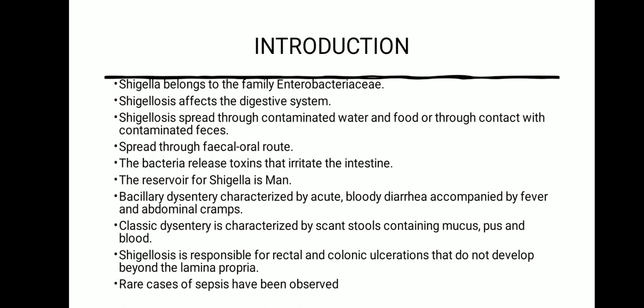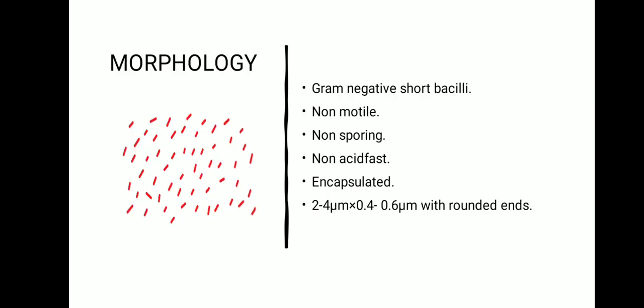Shigellosis is responsible for rectal and colonic ulceration due to severe infection, and does not develop beyond the lamina propria. Rare cases of sepsis have been observed. Next, we will see its morphology. This organism is a gram-negative short rod; it is a non-motile bacteria and does not produce any spores. It is non-acid fast and encapsulated. The size is 2 to 4 microns in length and 0.4 to 0.6 micrometers in width, with rounded ends.